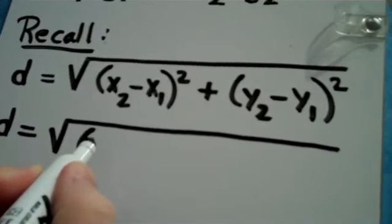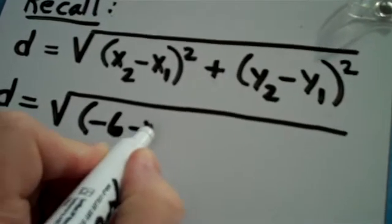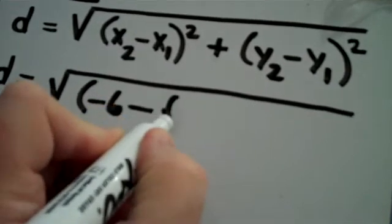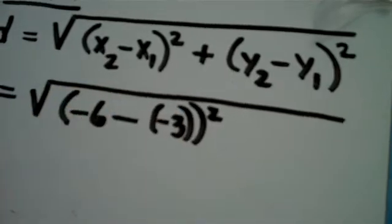X sub 2 is a negative 6. This minus comes from the formula. X sub 1 is a negative 3. That quantity is squared.